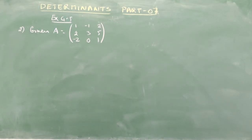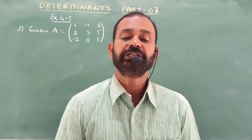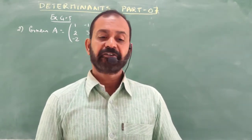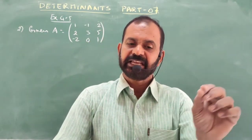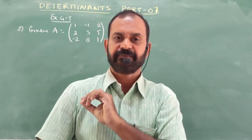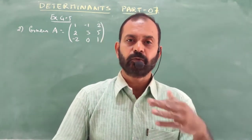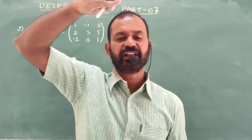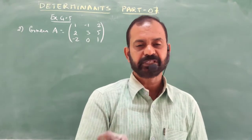Let me go to Exercise 4.5 — find the adjoint of each of the given matrices. Problem 1 is a 2×2 matrix. I have given the technique: if it is 2×2, just exchange the diagonal elements and change the sign for the other elements. For the matrix [1, 2; 3, 4], the adjoint is [4, -2; -3, 1].